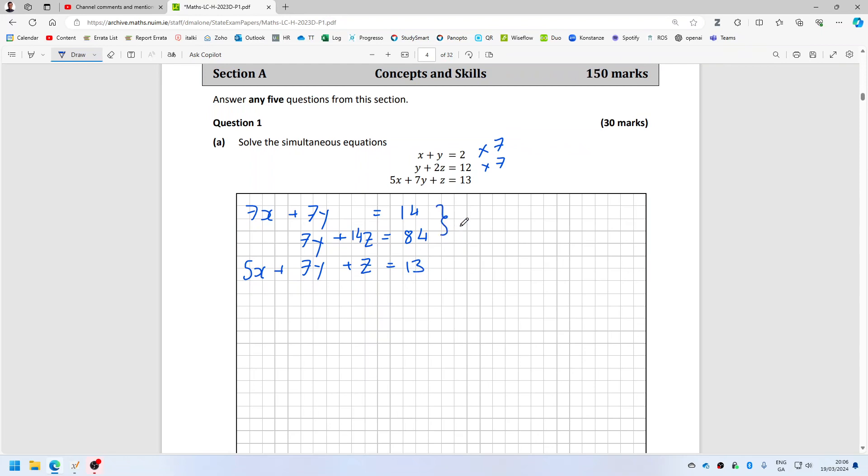Then I minus these two equations. 7x minus nothing is 7x, 7y minus 7y cancel, nothing minus 14z is -14z, and then 14 minus 84 is -70.